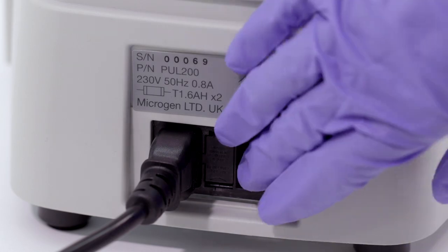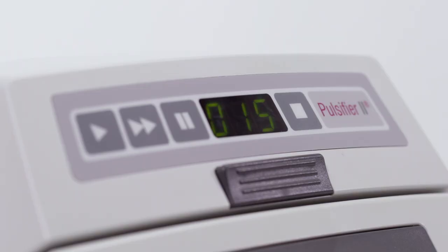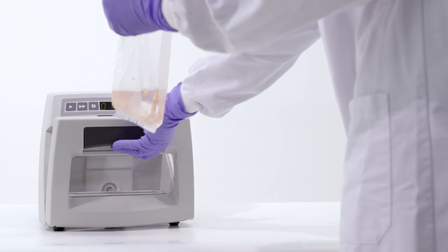Ensure the Pulsifier is plugged in and powered on from the switch at the back of the machine. Next, simply open the Pulsifier 2 door.